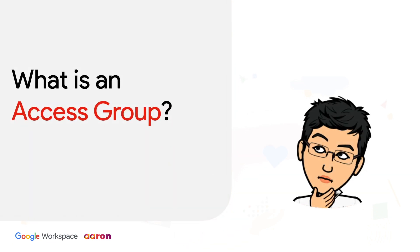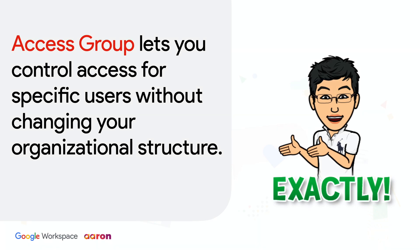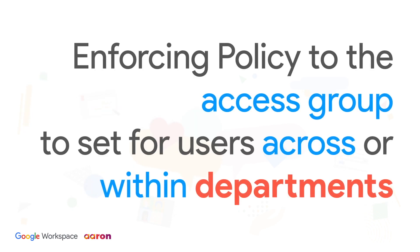What is an Access Group? Access Group lets you control access for specific users without changing your organizational structures. You can turn on services for a group of users rather than entire organizational units. Originally, Google Workspace only allowed access to be configured at the organizational unit level. In 2018, Google introduced Access Group to make it possible to control access by other organizational elements. Access Group is useful when you need to turn a service on or off for users across or within a department. Without moving a user out of the OU, you just need to put their accounts into an Access Group to control access.